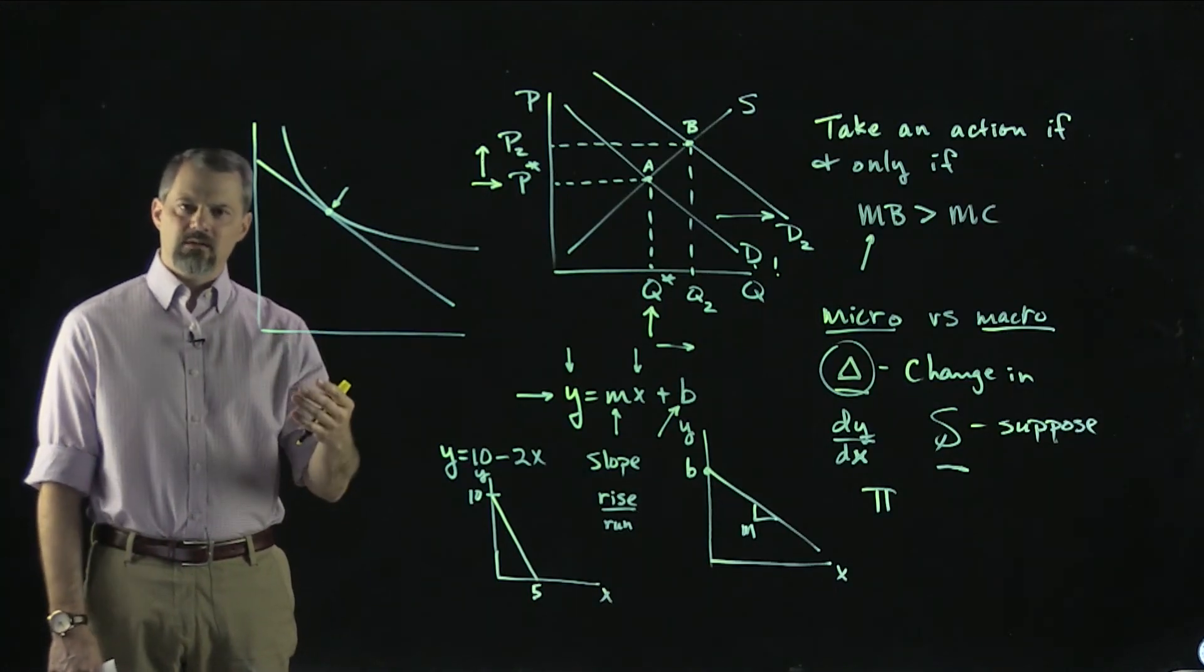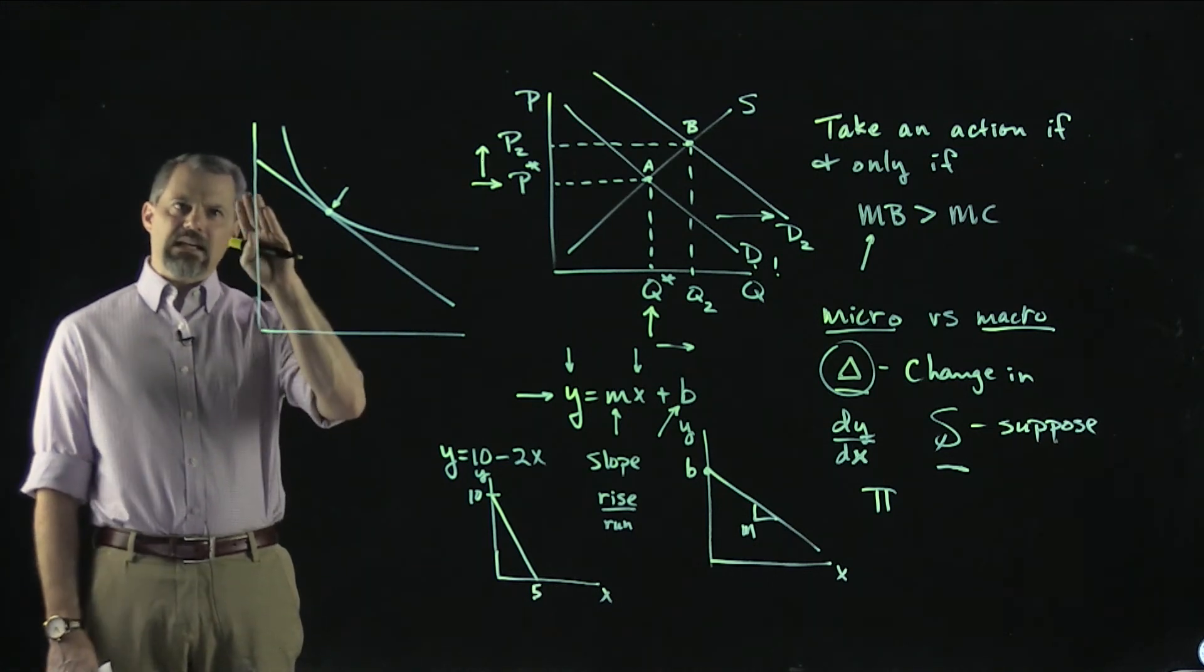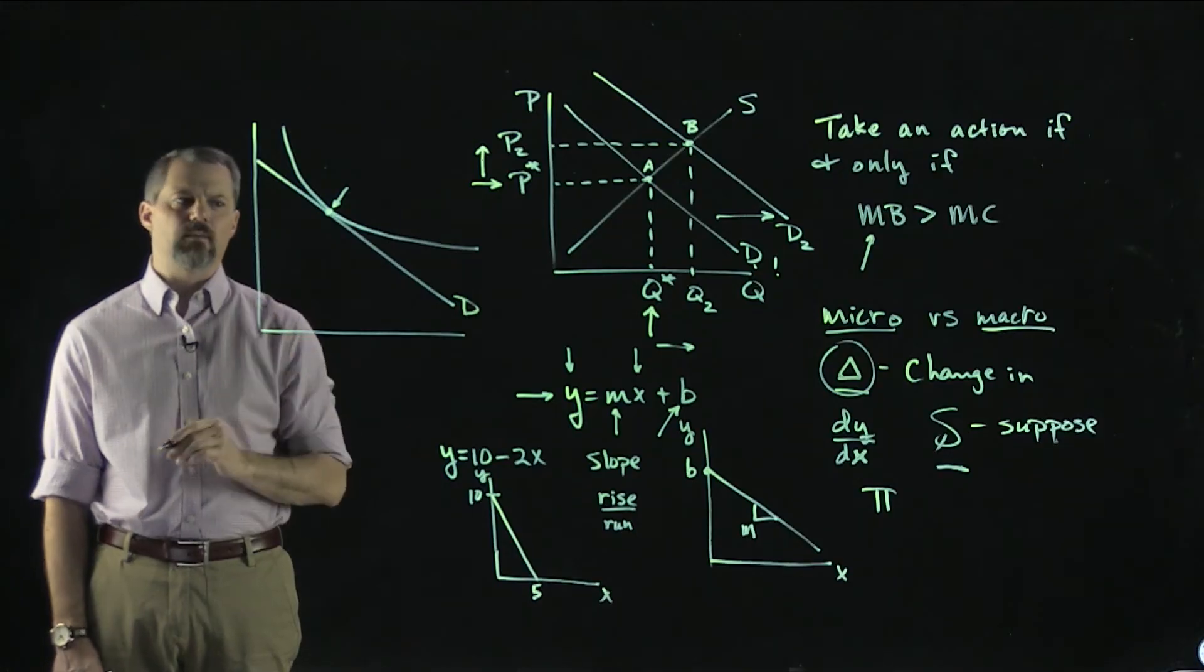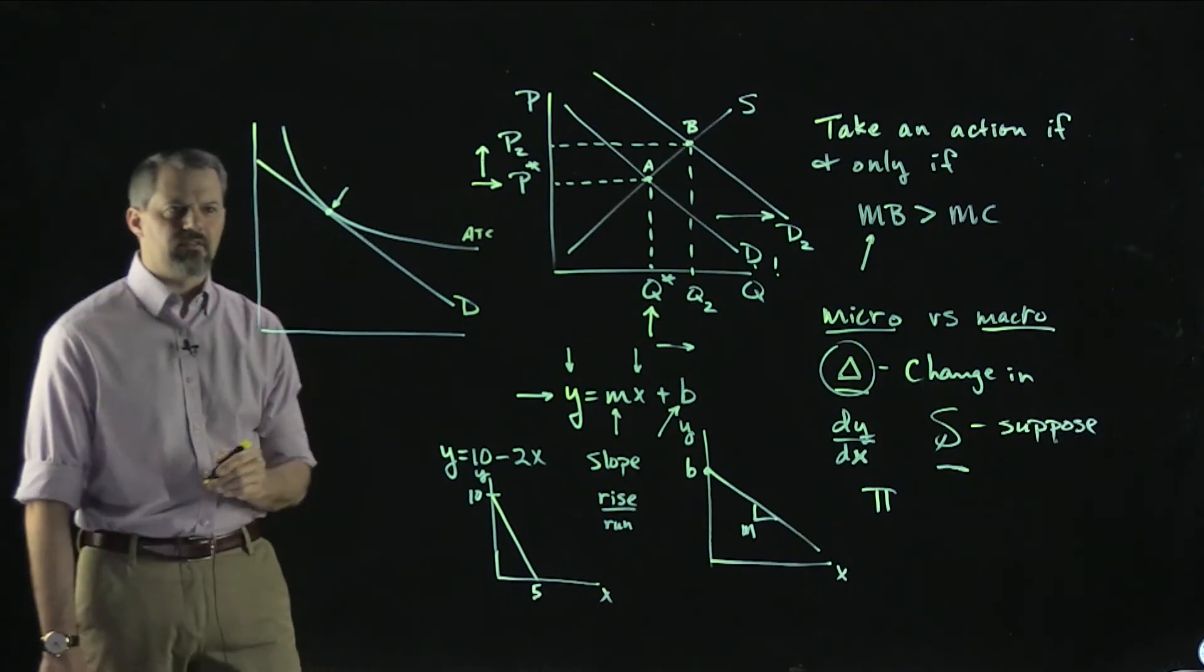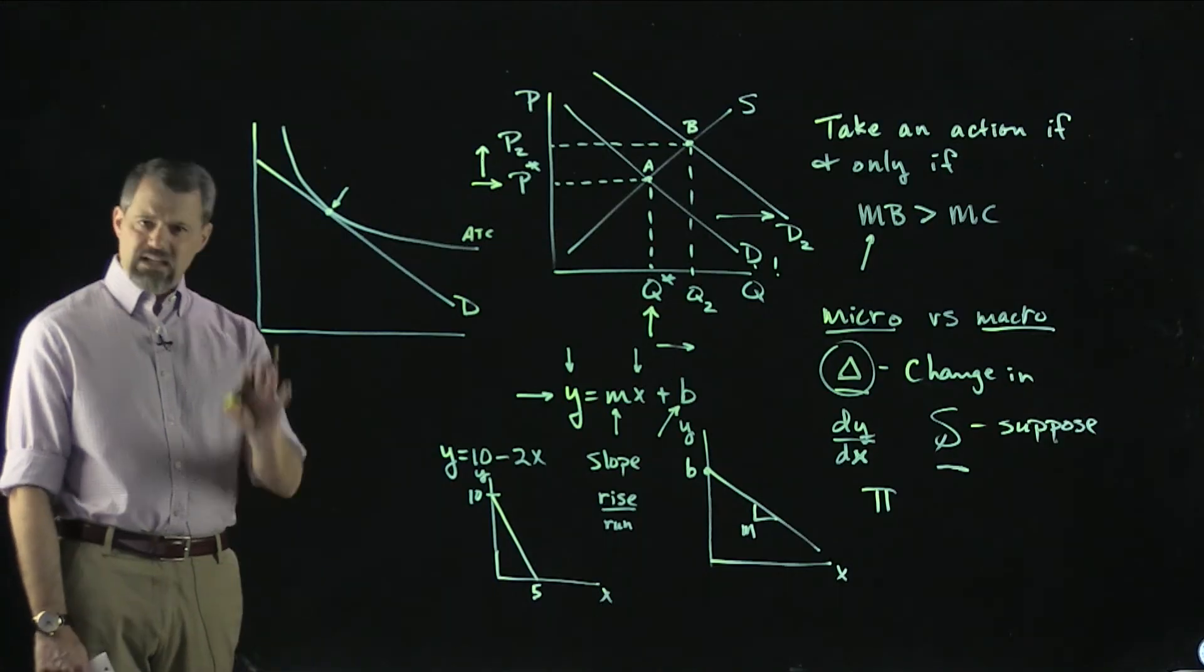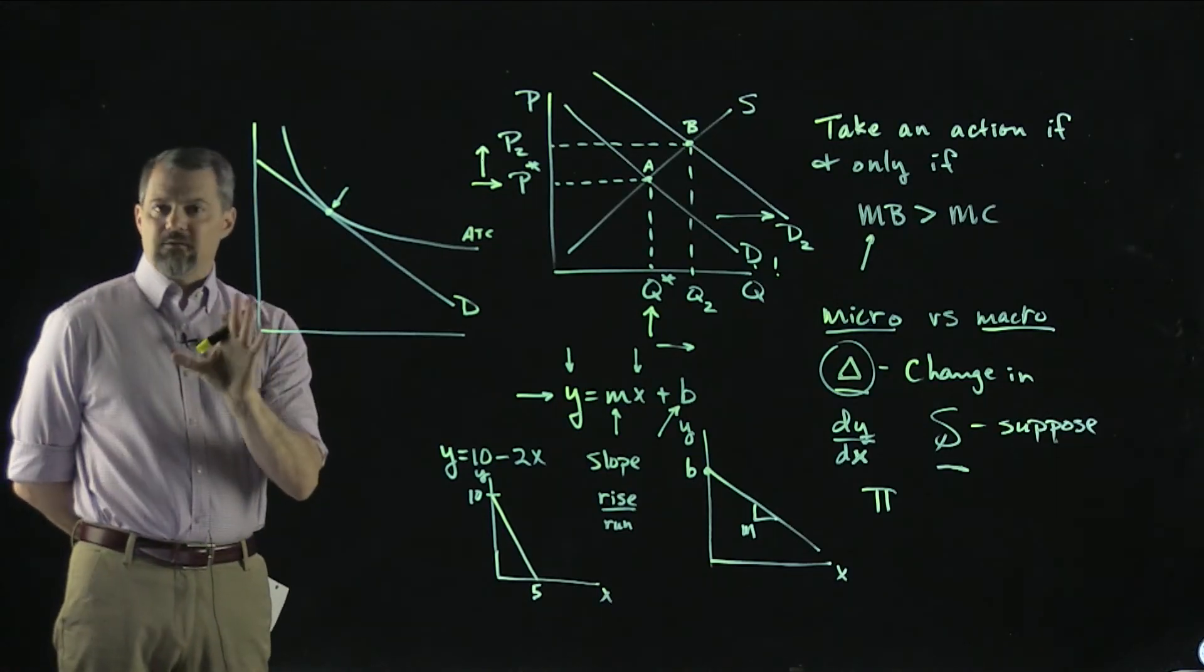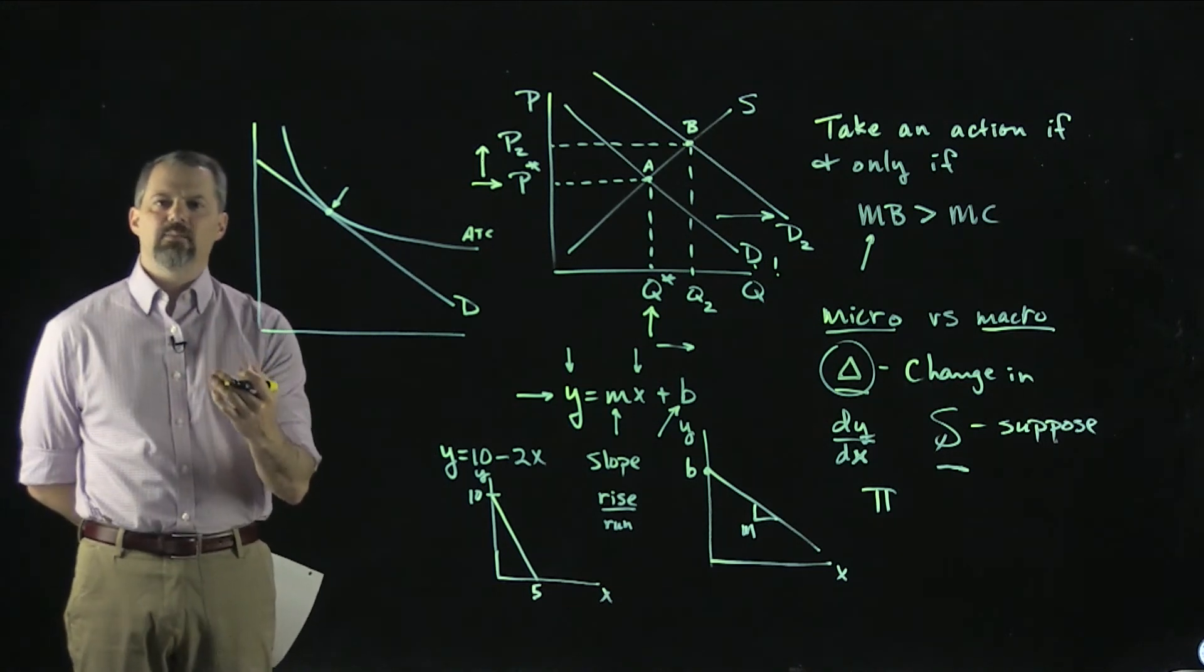With monopolistic competition, we know there's free entry into that market. So in the long run, in that type of market, profit gets driven to zero. In the long run, in a monopolistically competitive market, what we end up with is a situation where the demand curve that the firm faces ends up being just tangent to its average total cost curve. You would have seen a picture that's something like this.